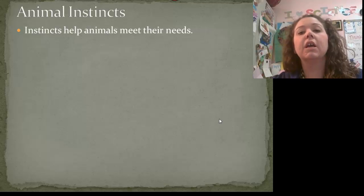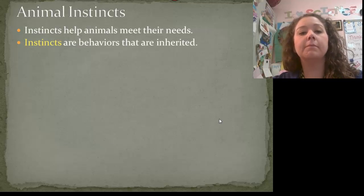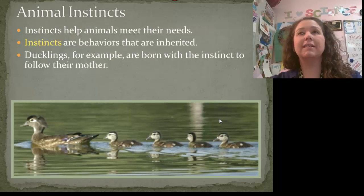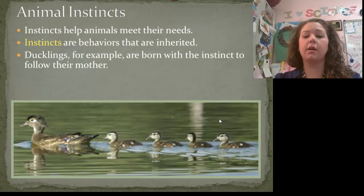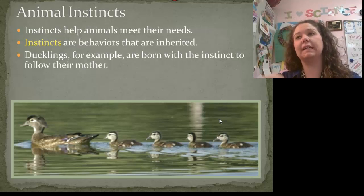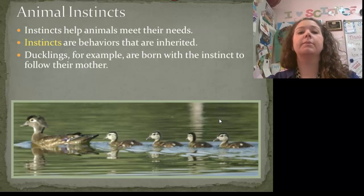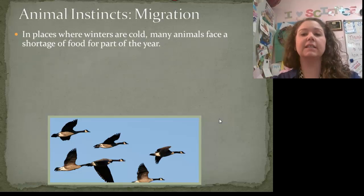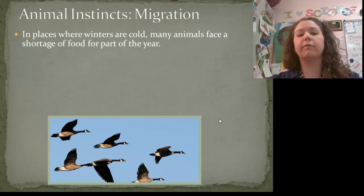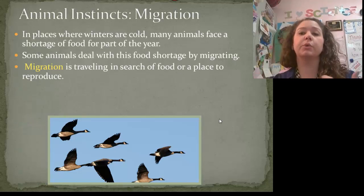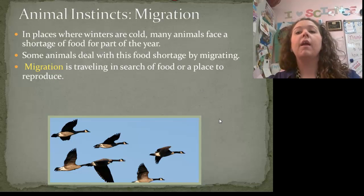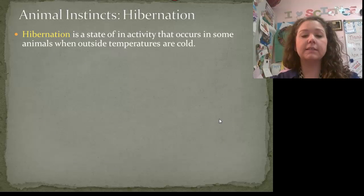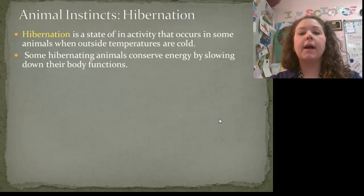Instincts are another adaptation — we'll talk more about them later this week and next. An instinct is a behavior that's inherited from parents and passed along — they're born with it. Examples include ducklings following their mother, bears hibernating, and birds and butterflies migrating. They automatically know to do it; no one teaches them. It's an instinct that helps them survive. Migration happens when winters are really cold and animals travel south in search of food or a place to reproduce.